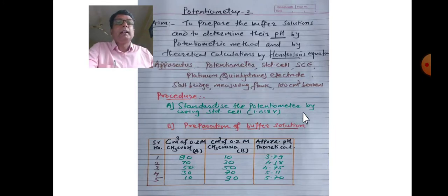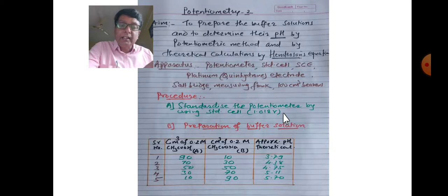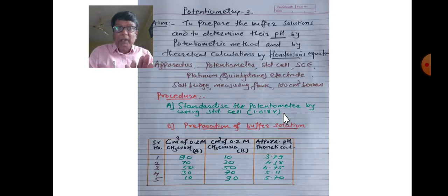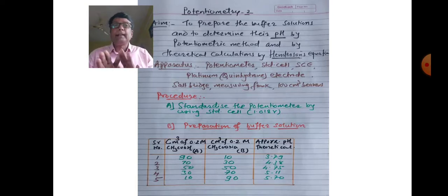Procedure: standardize the potentiometer by using standard cell 1.018 volts. The potentiometer must be standardized first, then take readings. For standardization, the standard cell voltage is 1.018 volts, and the potentiometer reading should show 1.018 to verify standardization is complete.